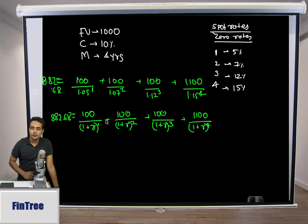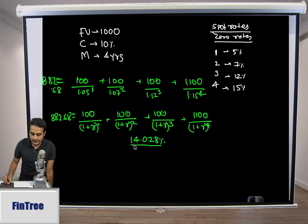You can set 882.68 as negative present value, 1000 as future value, 100 as payment, 4 as N, then compute I/Y. The result is 14.028%. This one single rate satisfies the equation - we call this the YTM.